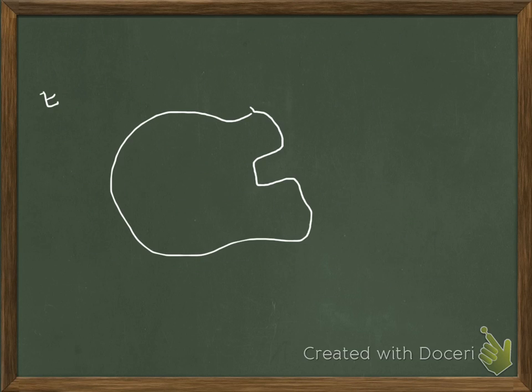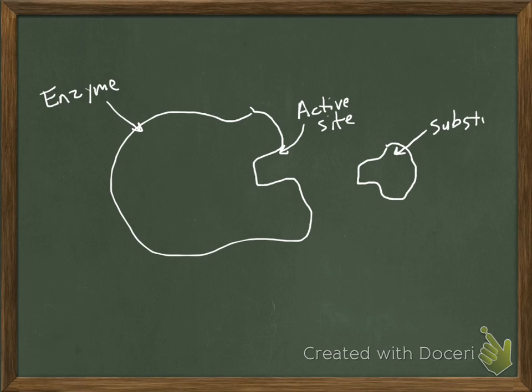So, we'll redraw the enzyme. I'm drawing it a little more specific this time. You can see that the shape of the active site is just a little more defined than it was in the other one. And here comes this molecule that the enzyme acts on. It's called the substrate. And you can see that the substrate fits very nicely in the active site. And as an example, we're going to say that the substrate is sucrose.